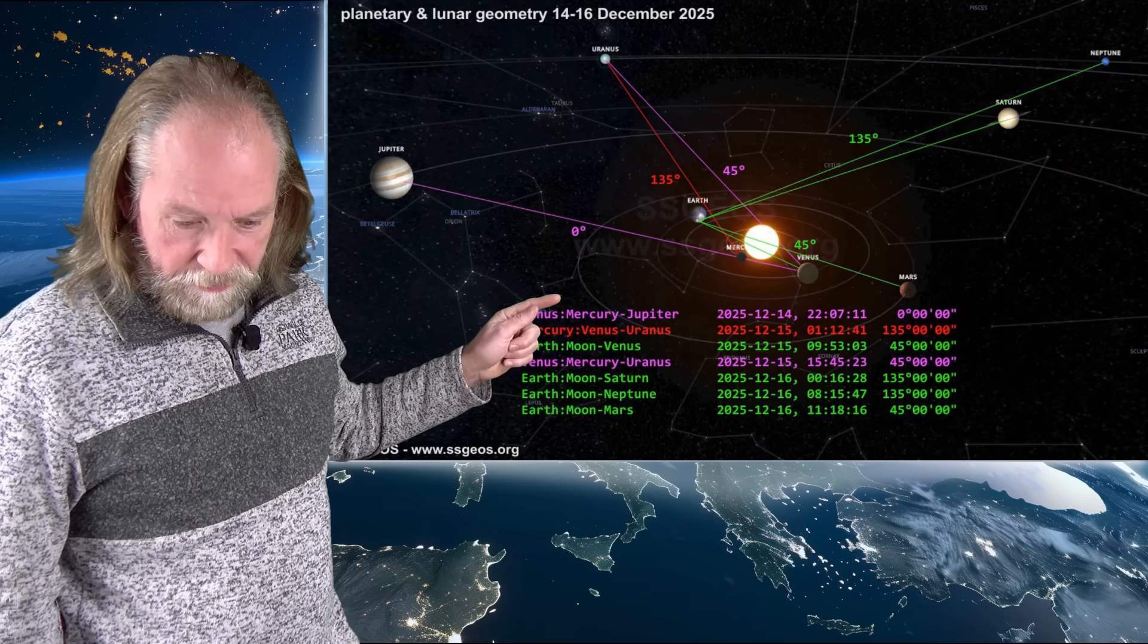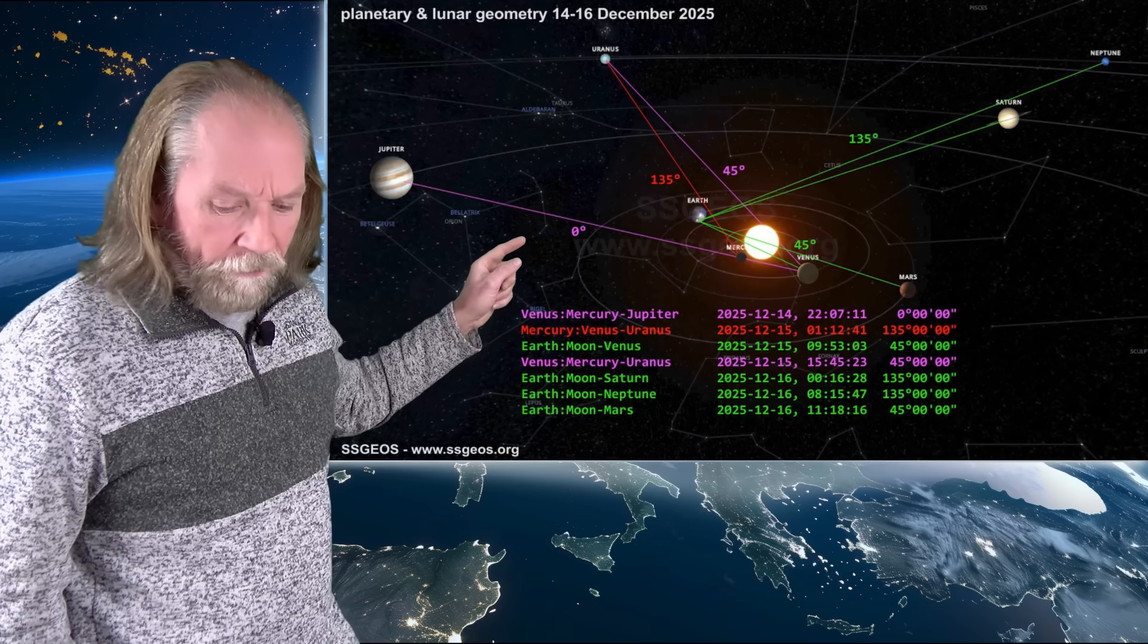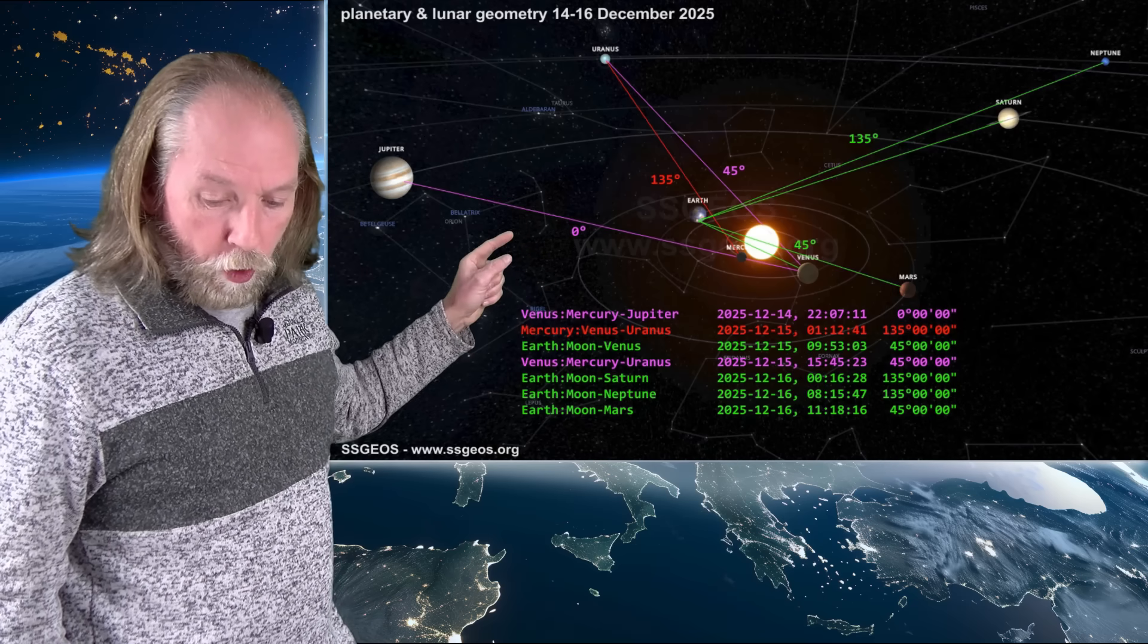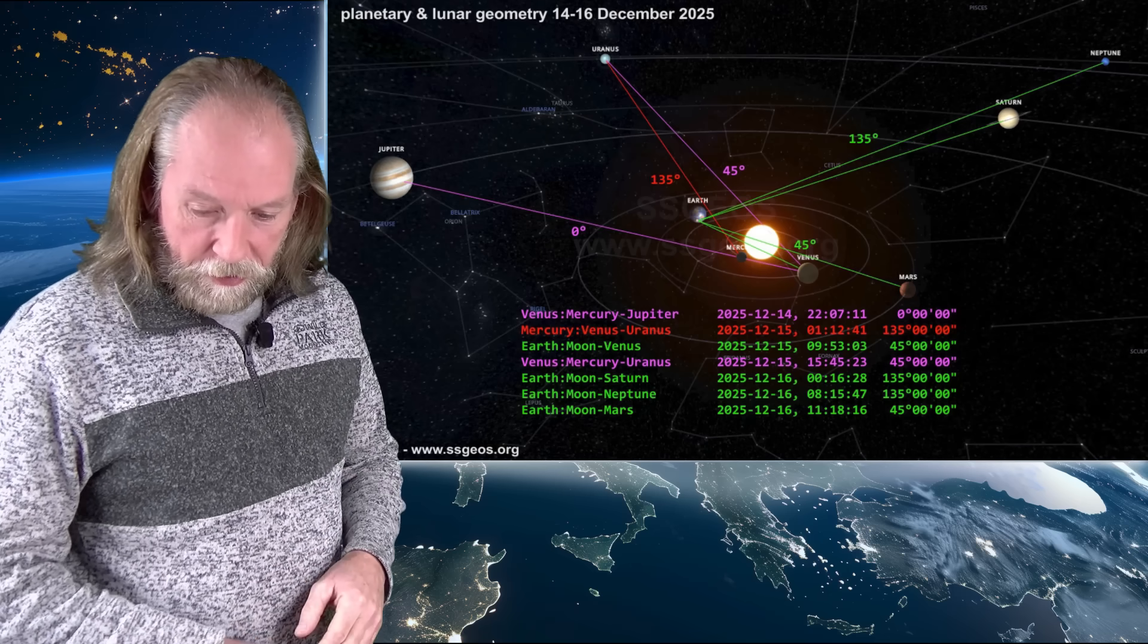And we see we have 14-16 December, that is the lunar geometry with Venus, with Mars and with Saturn Neptune, like I said, the 45 and 135 degrees convergence.